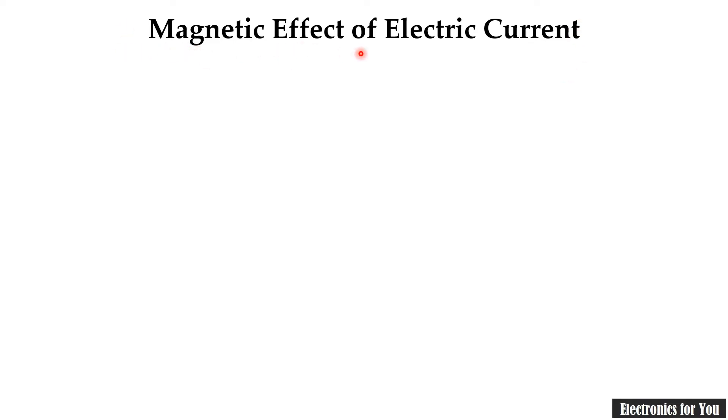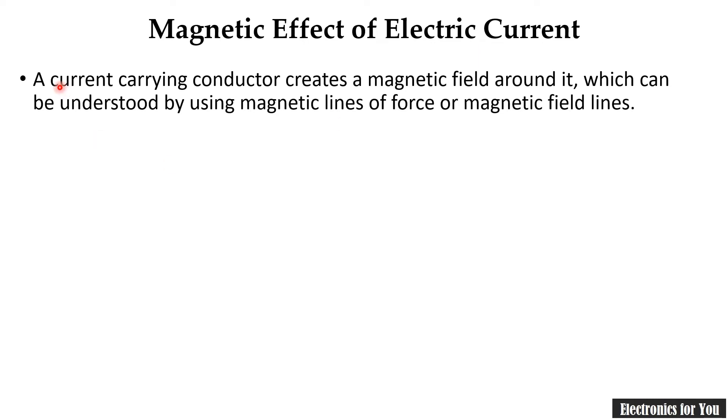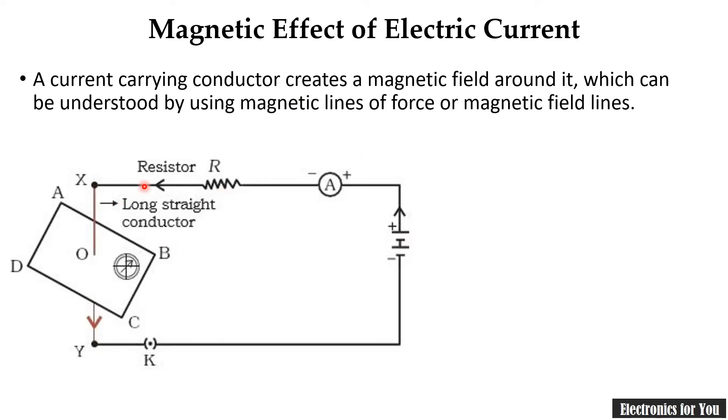Now, let us talk about the magnetic effect of electric current. A current carrying conductor creates the magnetic field around it which can be understood by using magnetic lines of force or magnetic lines. So, we know that a current carrying conductor creates the magnetic field. For that, we are having this experiment. This is a paper and this is our compass which was shown in my previous slide.